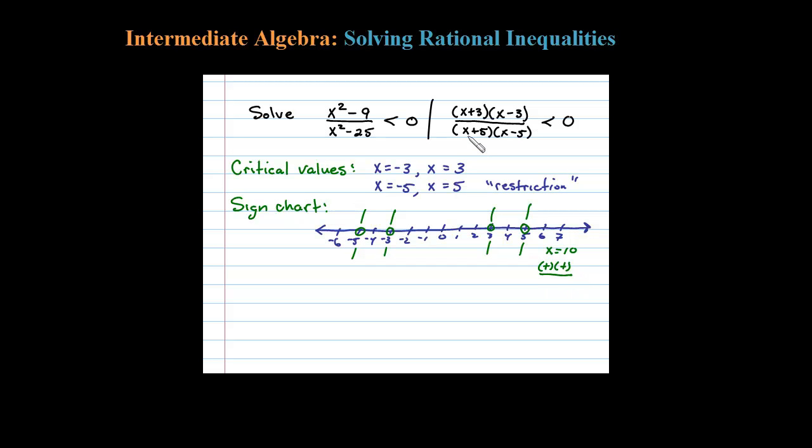Times 10 minus 3 is positive. Don't really care what the numbers are, just worried if it's positive or negative. 10 plus 5 is positive, and then in the denominator 10 minus 5 is positive. Okay, when you multiply and divide four positives, you're going to be left with a result that is positive. So in that interval, everything's positive.